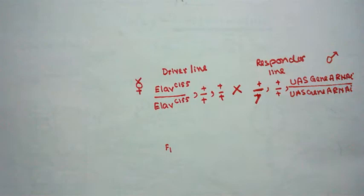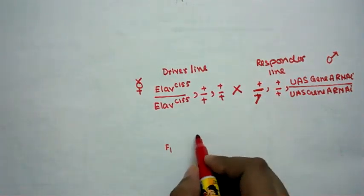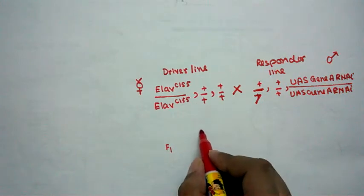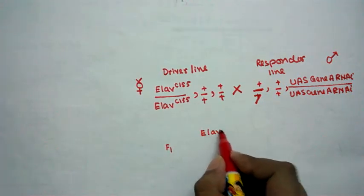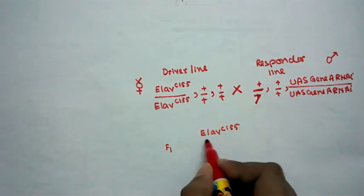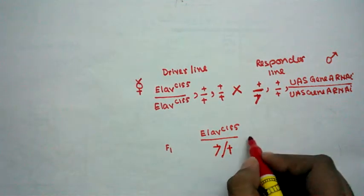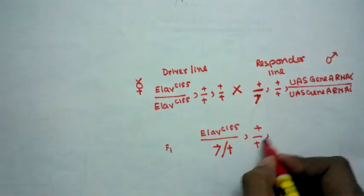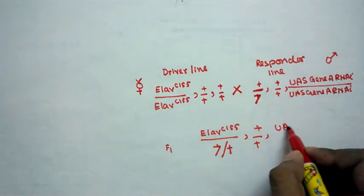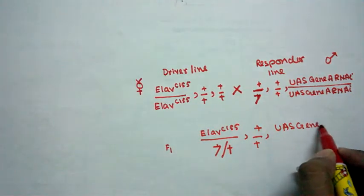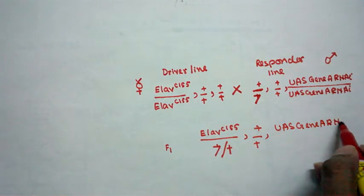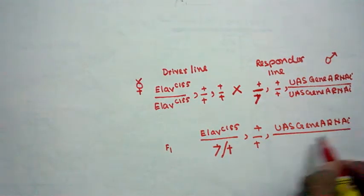Now we expect the F1 generation. In the F1 generation, we would expect knockdown would happen. So we would write the F1 genetic configuration. It would be ELAV-C155 over Y or over plus. Then second chromosome, there is no change.